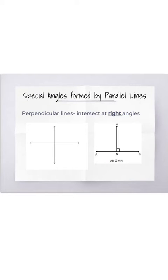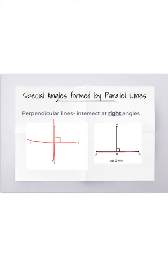Perpendicular lines are lines that intersect at right angles. They make 90 degrees, so you would indicate that with a box. On the left hand side we have two lines that are perpendicular and intersect at 90 degree or right angles. On the right hand side there are two segments that are perpendicular because they intersect at 90 degrees.